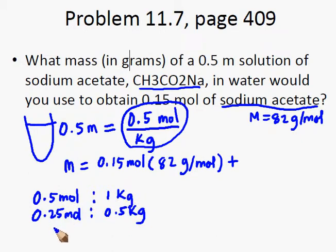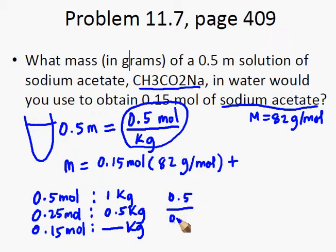Now, what about 0.15 mol? If we have only 0.15 mol of sodium acetate, how much in kilogram of water is present? We can solve this problem by dividing 0.5 mol with 0.15 to get how much the substance was reduced to.